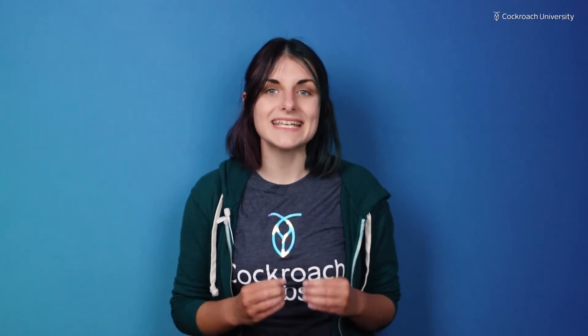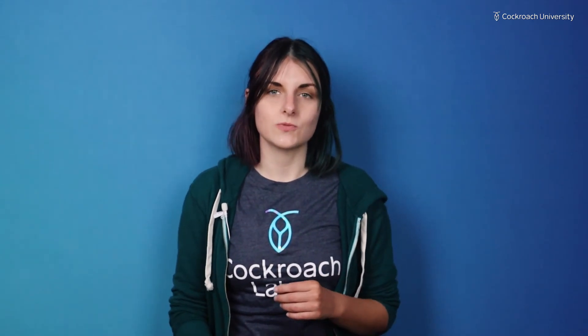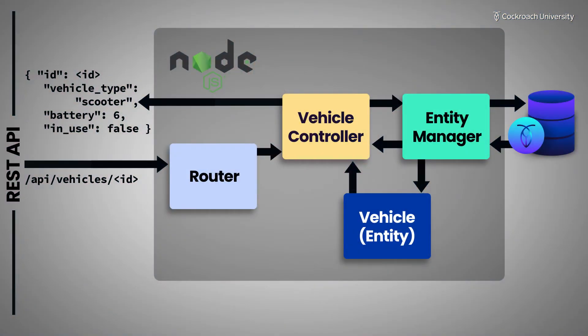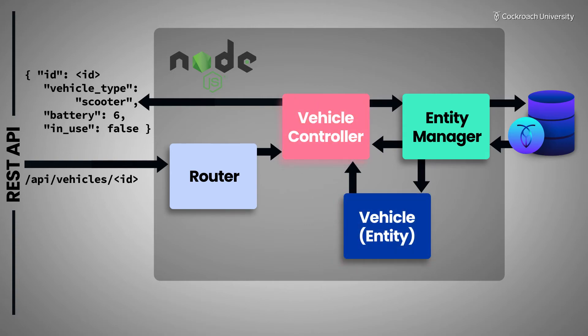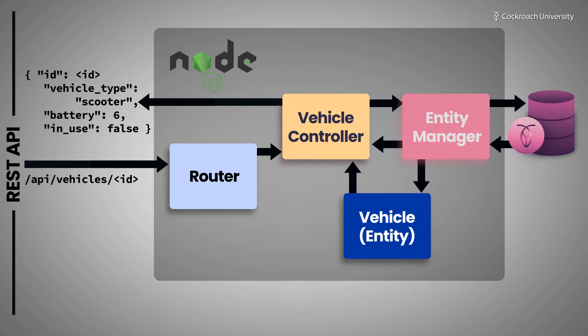The Mover application follows a common Express pattern. Teaching Express and TypeORM is out of scope for this course. Instead, we'll be focusing on the aspects of Mover that are key to understanding how applications work with CockroachDB. We'll dig into how entity objects model different types of data and table relationships in the database. We'll also work with controller methods that perform database transactions, and we'll be working with entities and tables in the database that underpin the whole Mover application.